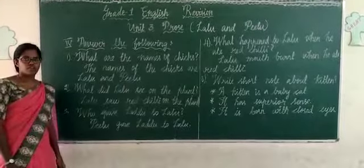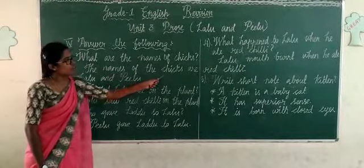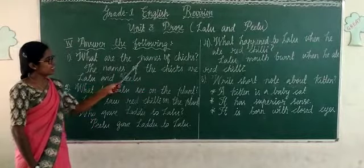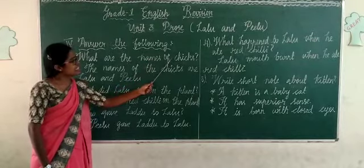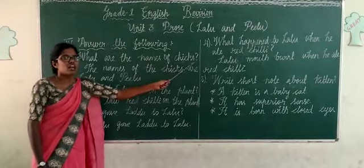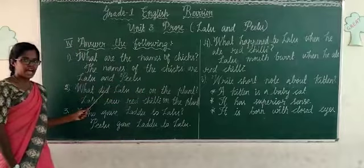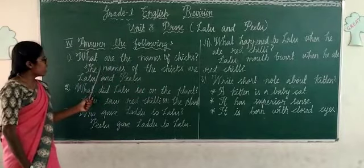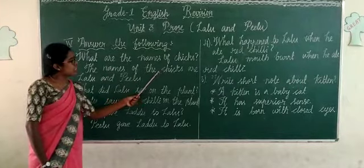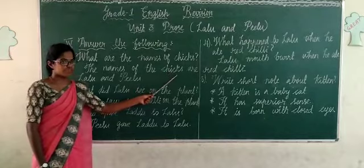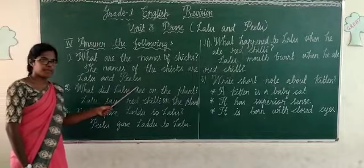Fourth part: answer the following. What are the names of the chicks? N-A-M-E-S. Names of chicks. C-H-I-C-K-S. Chicks. The names of the chicks are Lalu and Pidu. The names of the chicks. N-A-M-E-S. C-H-I-C-K-S. Chicks are Lalu. L-A-L-U. Lalu and Pidu.